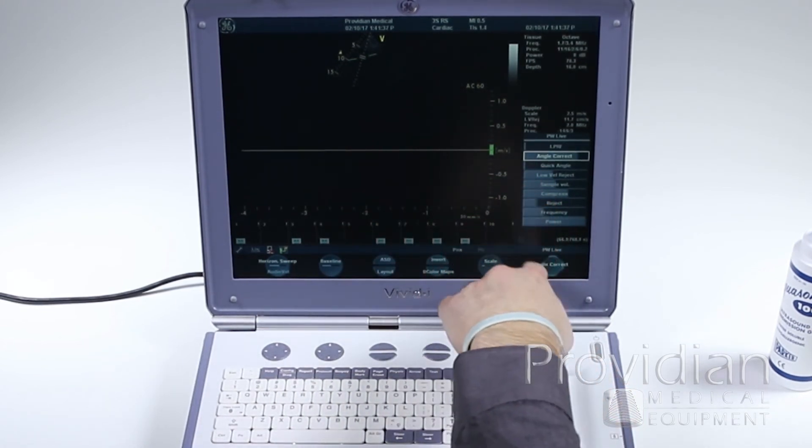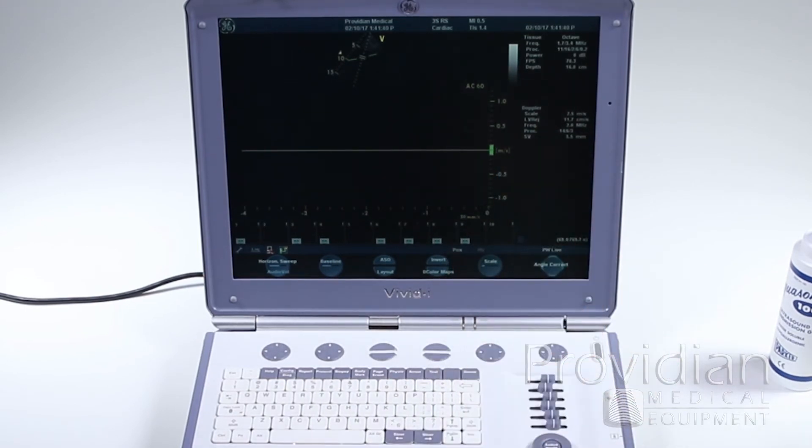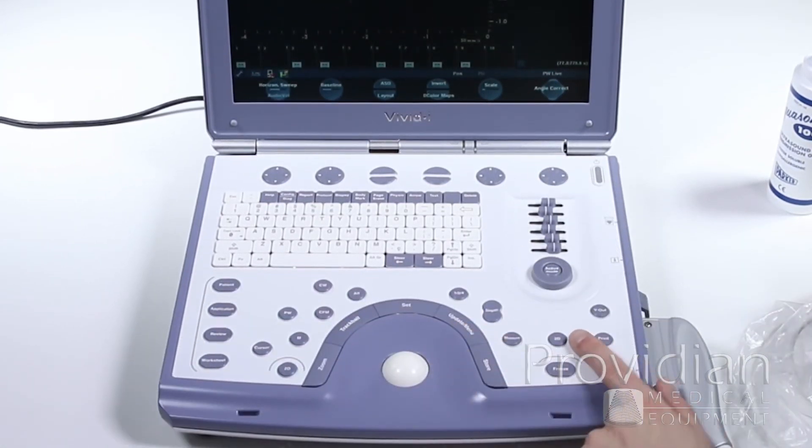This quick angle, low velocity rejection, sample volume compression rejection, frequency and power. Just the other image optimizations for while you're in 2D mode or pulse wave Doppler mode. You also have this 2D button here.